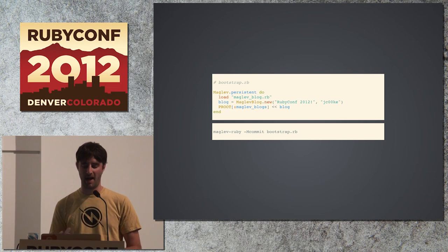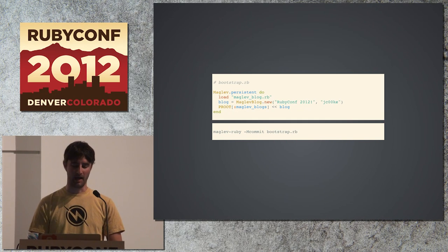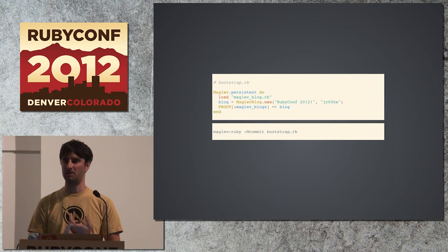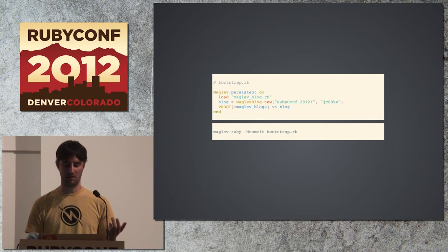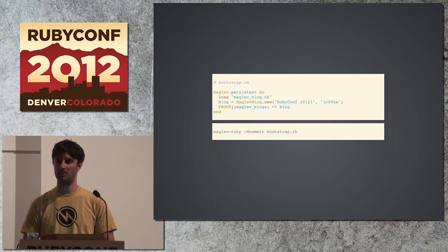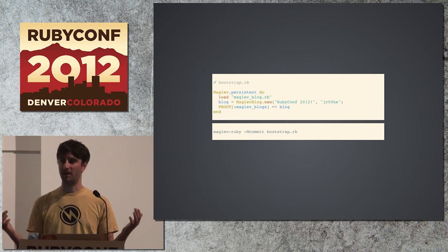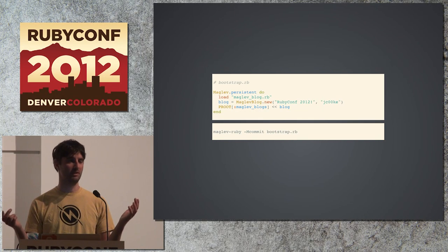If I have a bootstrap script, I can load the classes inside a persistent block, set things up, and then commit using the dash-m commit flag — which is the same as saying 'maglev commit' at the end of the script. That's it: objects are created, and they will stick around until you delete them.